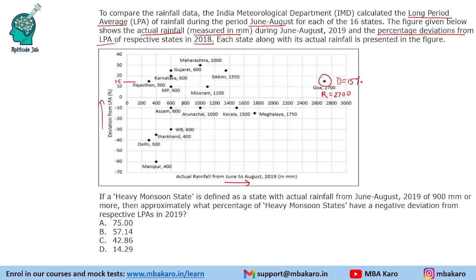What is LPA? It is described in a later question. We just need to see whether the deviation value is a positive or negative number and what percentage it is. The first question is: if a heavy monsoon state is defined as a state with actual rainfall of 900 mm or more, then approximately what percentage of heavy monsoon states have a negative deviation?